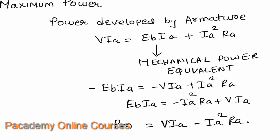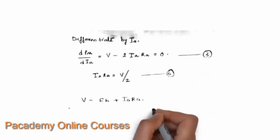Next we will derive the maximum power output of an electrical motor. Taking the previous equation, V·I_A — the power input to the armature — can be written as E_B·I_A plus I_A²·R_A. Rearranging, we get E_B·I_A equal to V·I_A minus I_A²·R_A. So E_B·I_A, which is the back EMF into armature current, can be written as mechanical power P_M equal to V·I_A minus I_A²·R_A.